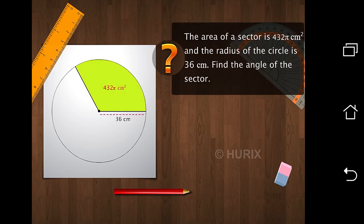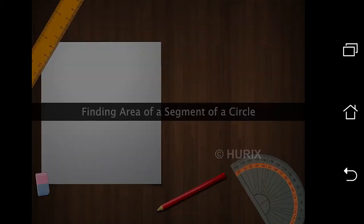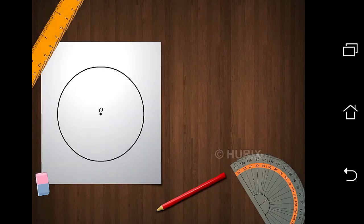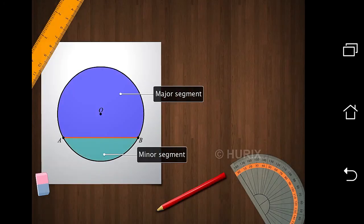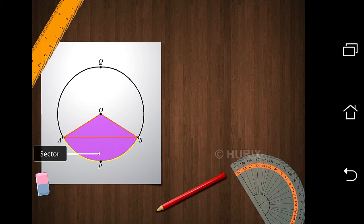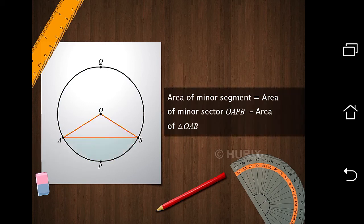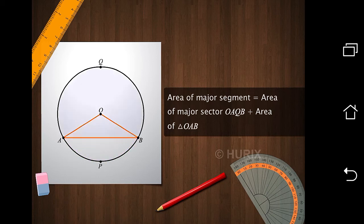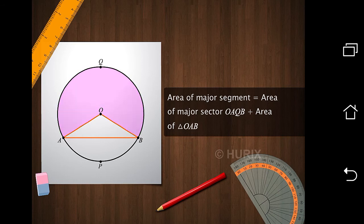The area of a sector and the radius of the circle are given. Find the angle of the sector. In this circle, AB is a chord. Let's see how to find the area of the segments formed by the chord. We'll join OA and OB. Observe that OA and OB are the radii and they form a sector along with the arc AB. Notice that the area of the minor segment of the circle is equal to the difference between the area of the minor sector OAB and the area of triangle OAB.